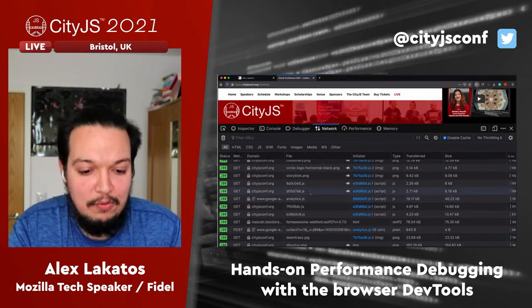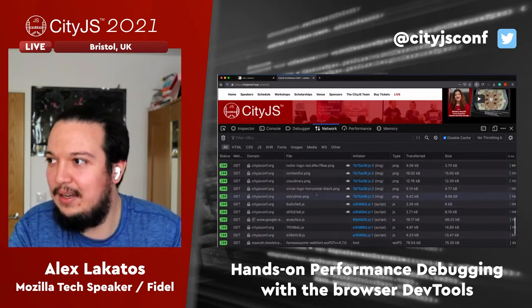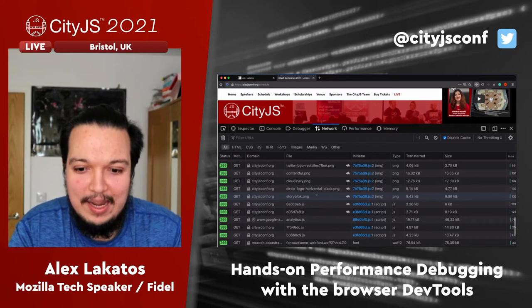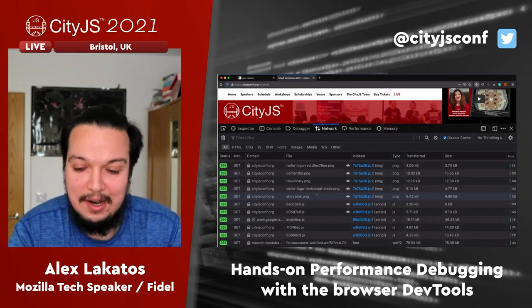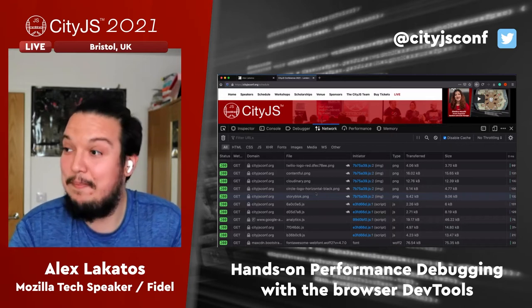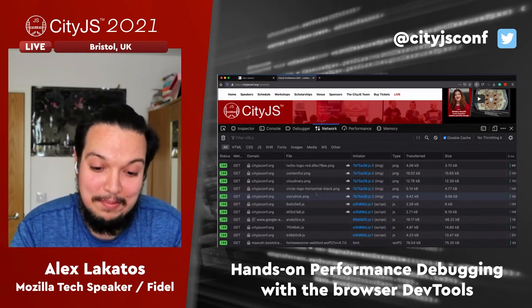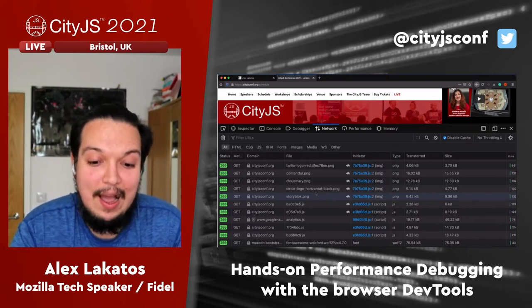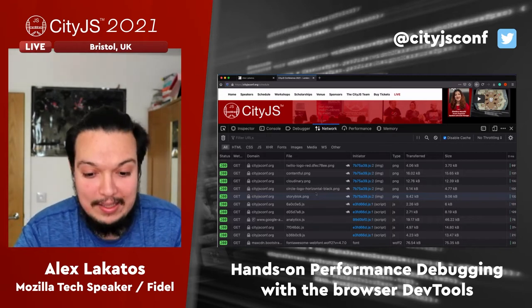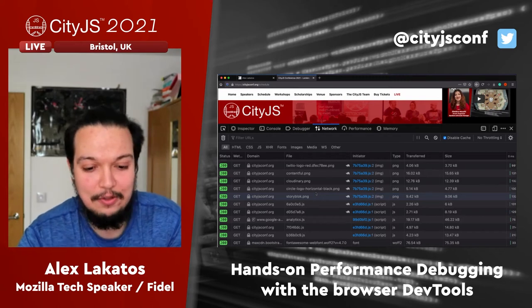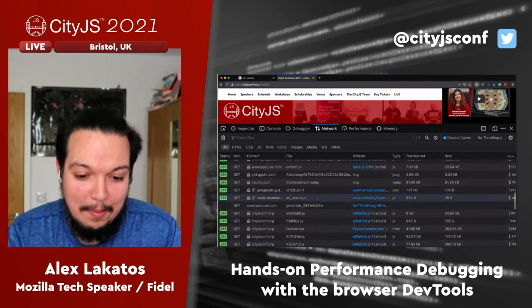Everybody talks about JavaScript performance, but if your JavaScript is 47 megabytes you need to download, it's not really a JS performance problem — it's that initial download chunk. I live in England and pay through the nose for gigabit fiber, but not everyone has the same internet connection. I used to be on 20 megabytes of internet and was happy with that. Slow websites start in the network tab.